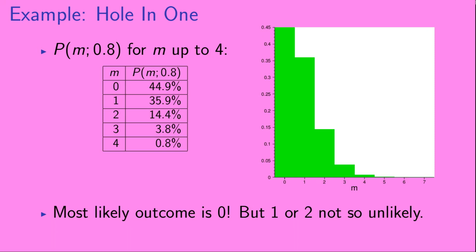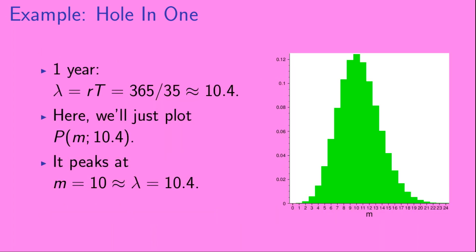Here we give the Poisson probabilities for m ranging between 0 and 4, given λ = 0.8, and we also plot the Poisson distribution. The most likely number of holes-in-one is 0, but getting 1 or 2 is not so unlikely. If you ask what is the probability of getting at least 1 hole-in-one in 4 weeks, the answer is greater than 50%. Now for the case of 1 year: λ = rt = 365/35 ≈ 10.4. The Poisson distribution for λ = 10.4 peaks at m = 10, which is again very similar to λ.